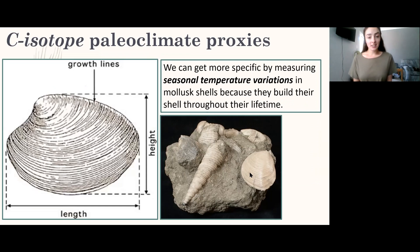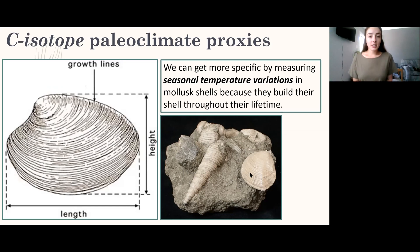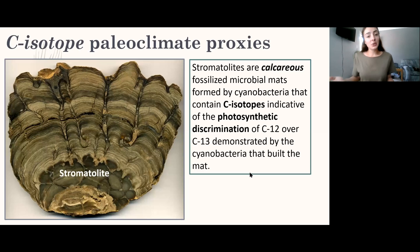We can get even more specific by looking at seasonal variations within shells and skeletons. Analogous to tree rings, molluscs and other organisms that build calcium carbonate shells do so faster in some seasons and slower in others, forming growth layers. We can distinguish annual and seasonal layers from most mollusc shells and understand how drastic the seasonal climate variations were during the time that mollusc was alive, using isotopes.